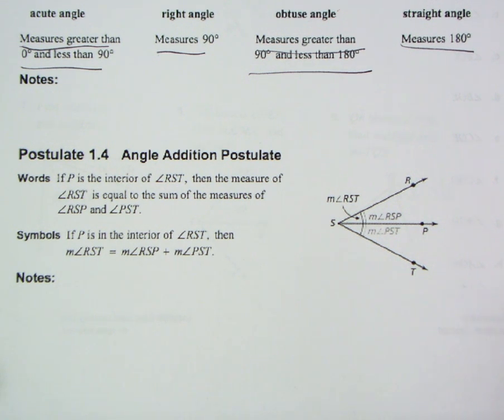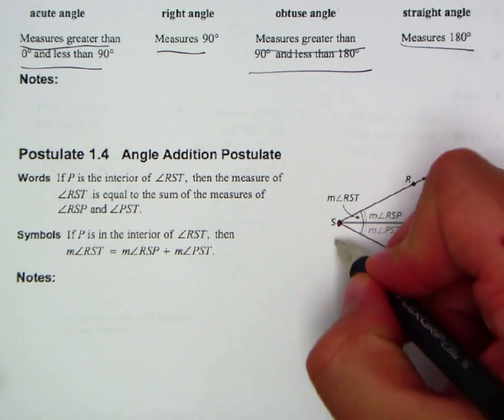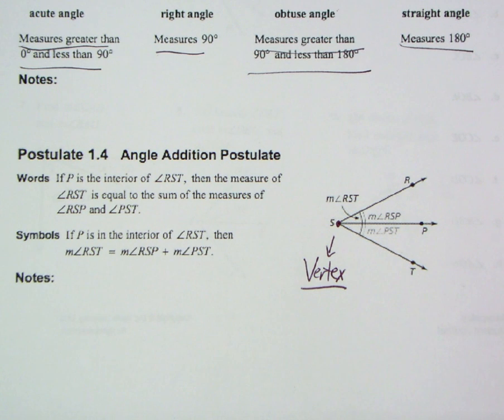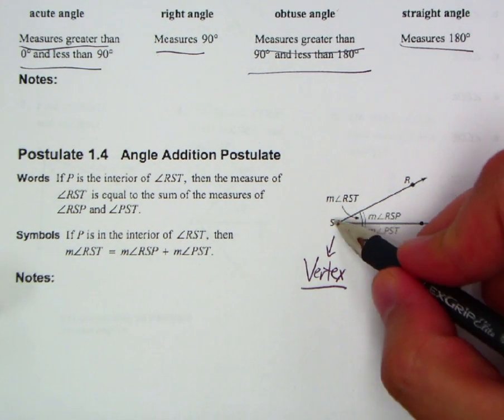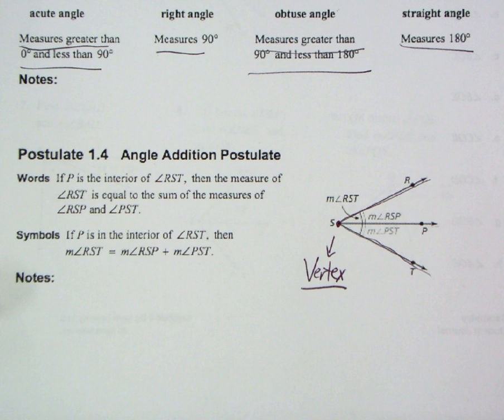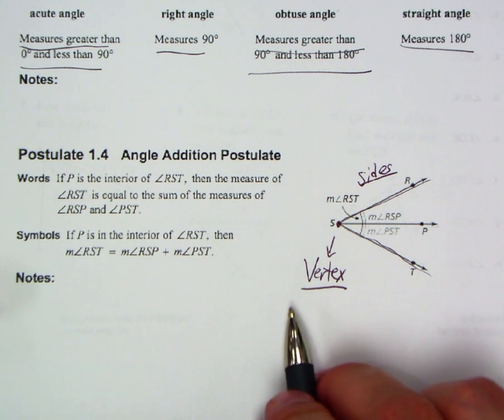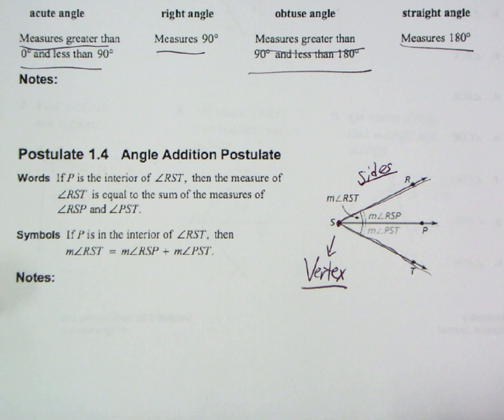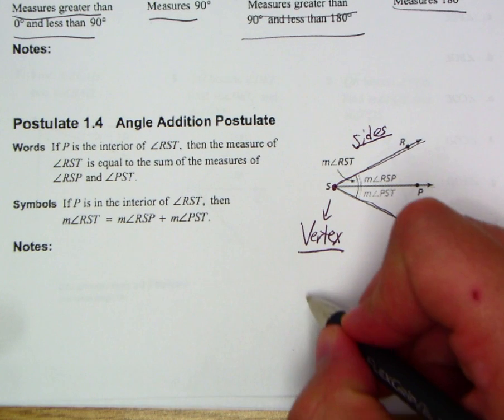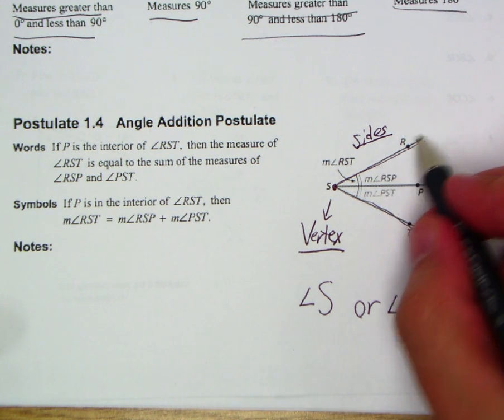Now, before we go on any further, I want to talk about how we name these. These have some very special names. This point, basically where all the angles are located, is what's known as the vertex of an angle. That is the vertex of an angle. That is the location of the measurement of the angle. Now, as for the other two pieces here, for instance, let's say we're looking at SR and ST here, or for that matter, even SP. Those are going to be sides. We've got sides of angles. We have vertexes. That's awful, isn't it? Vertices is actually the plural of it. A vertex or vertices of an angle.